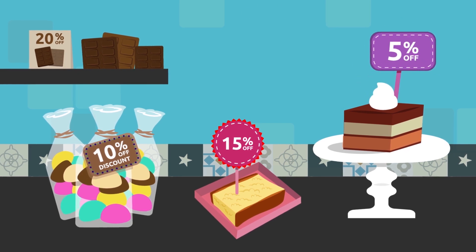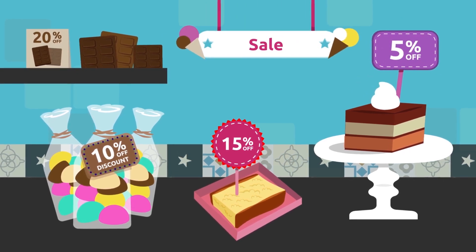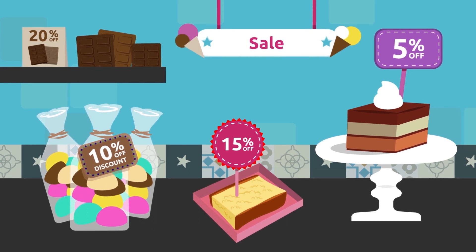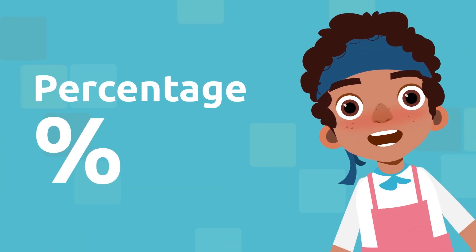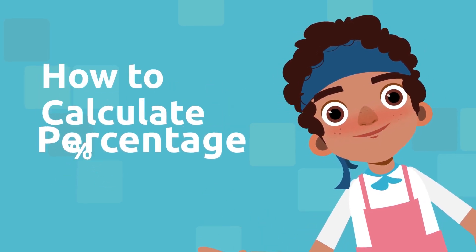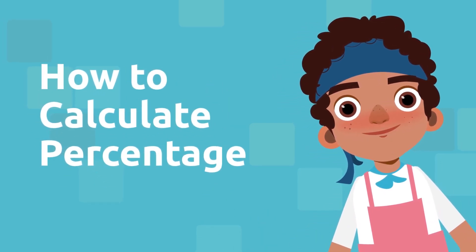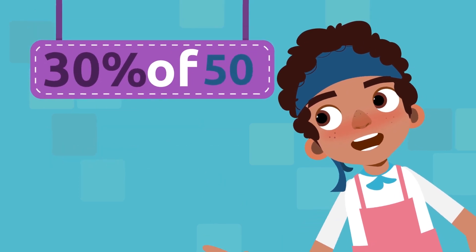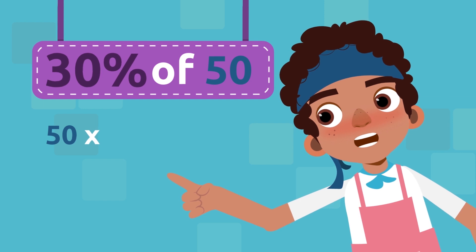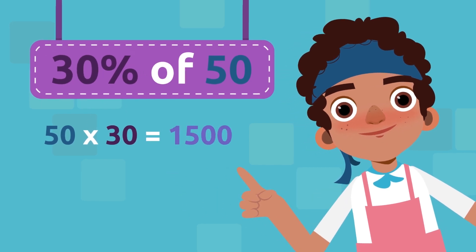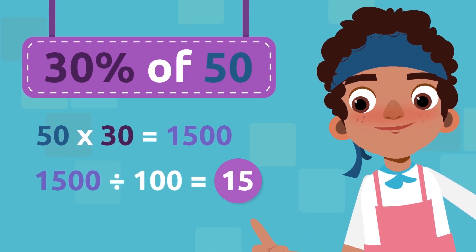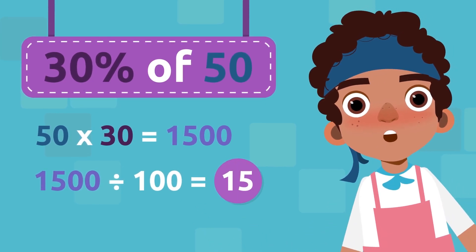We use percentage to calculate all types of discounts for products on sale. You can save a lot of money if you learn how to calculate percentage. Now that we know what percentage means, let's find out how to calculate it. To calculate the percentage of a number, we multiply that number by the indicated percentage number and divide by 100.